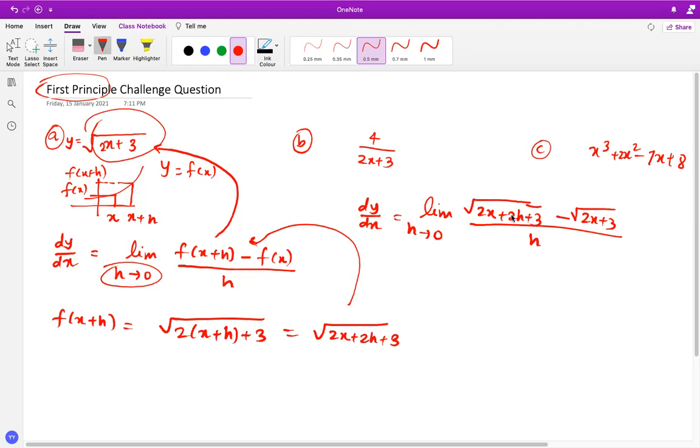Now, if I straight away put the h value at zero, I get zero over zero, which is indeterminate form. So if I put h at zero here, you can see clearly, I get root 2x plus 3 minus 2x plus 3.